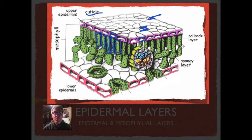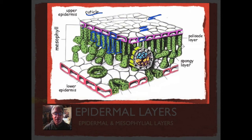In most dicots, the palisade layer and the mesophyll can be separated — we have a spongy mesophyll and then the palisade layer. In other plants they're not so differentiated and you really can't see much difference between the two. The mesophyll includes both the palisade layer and this more loosely structured tissue called the spongy layer, or spongy mesophyll. The spongy cells are also loaded with chloroplasts.